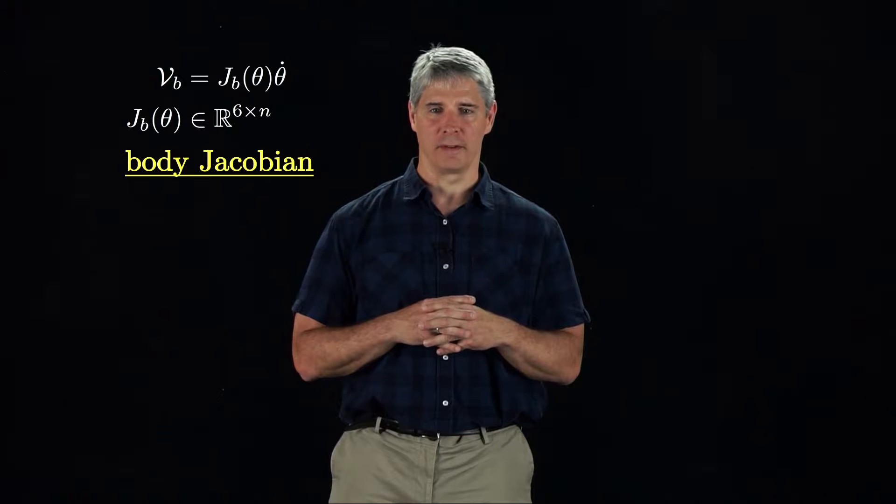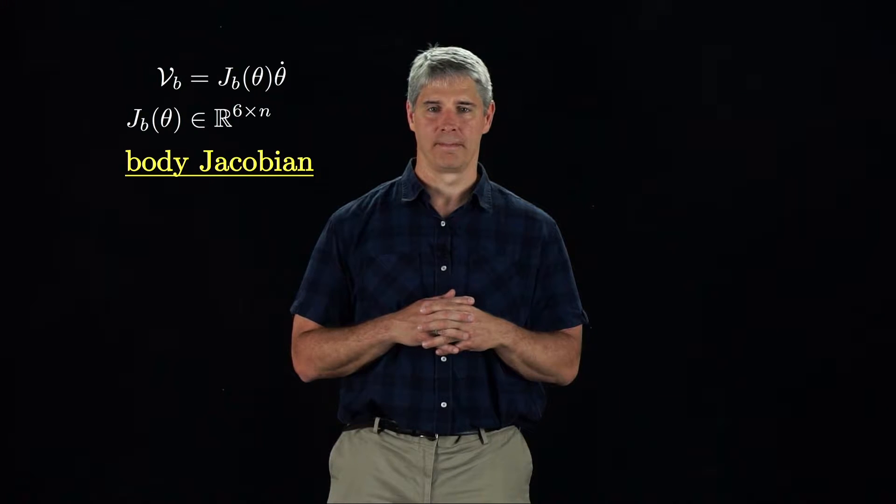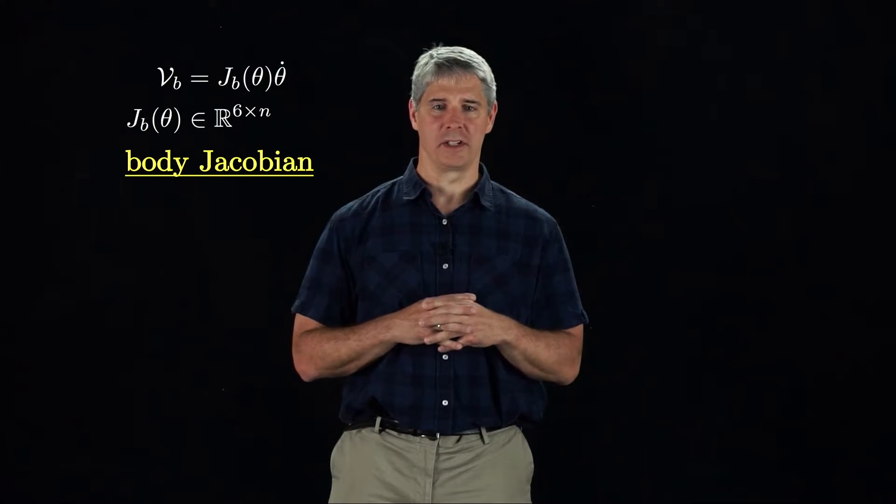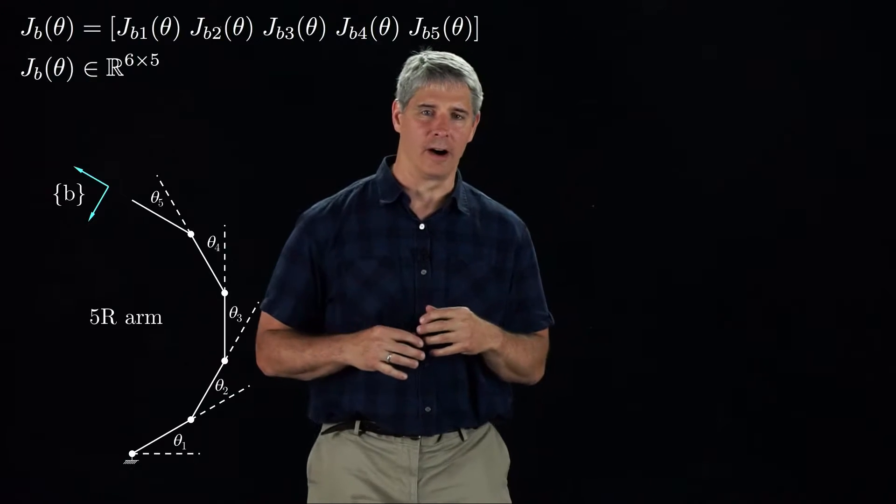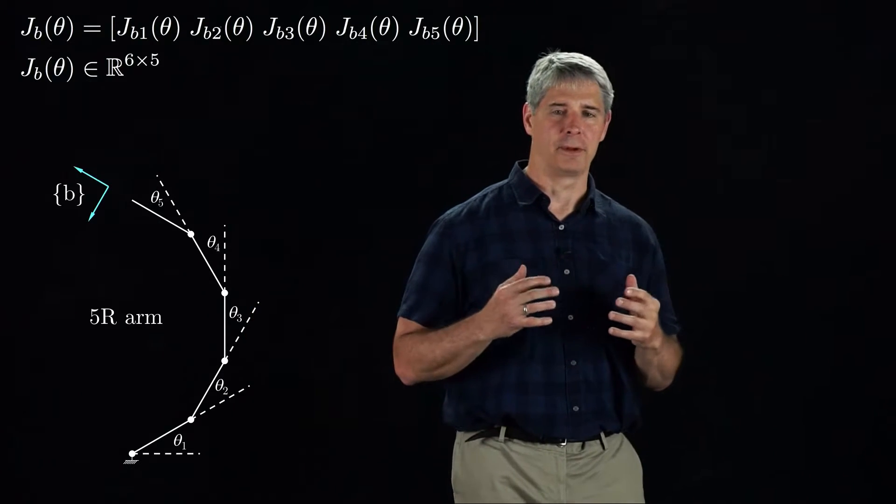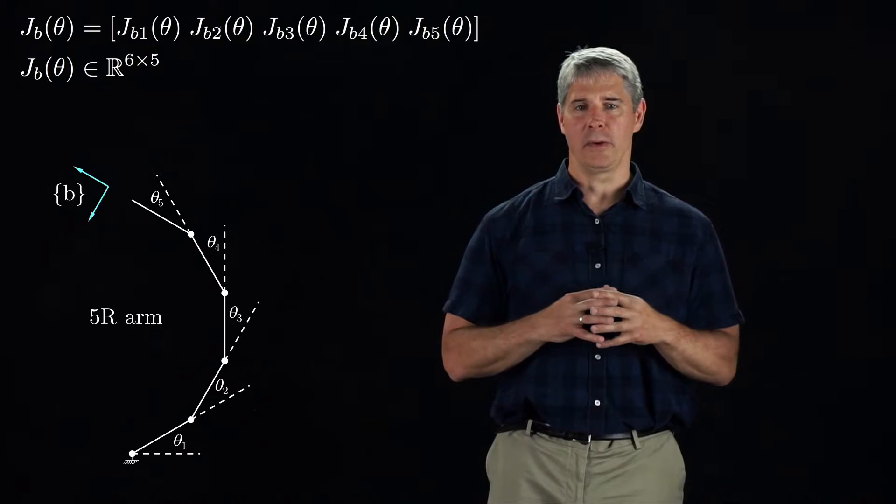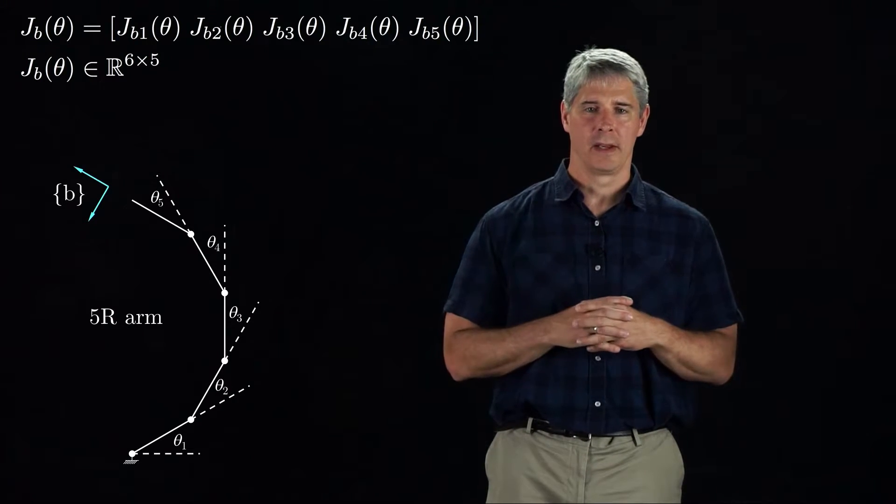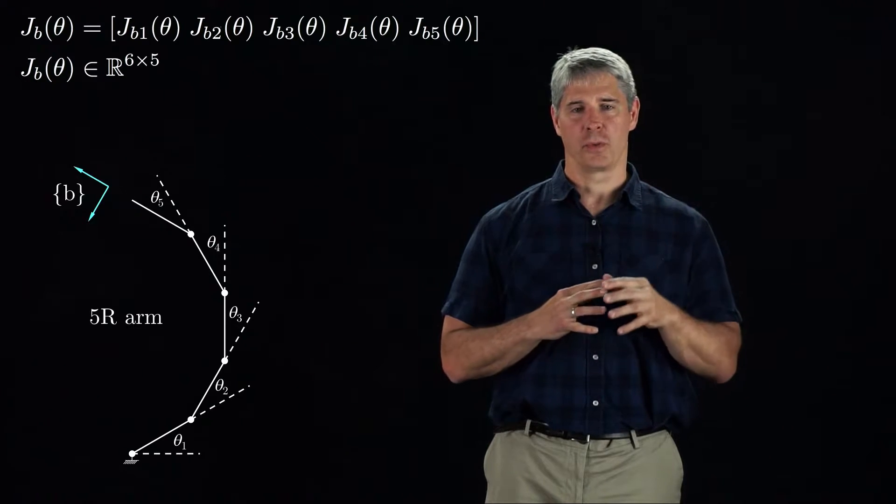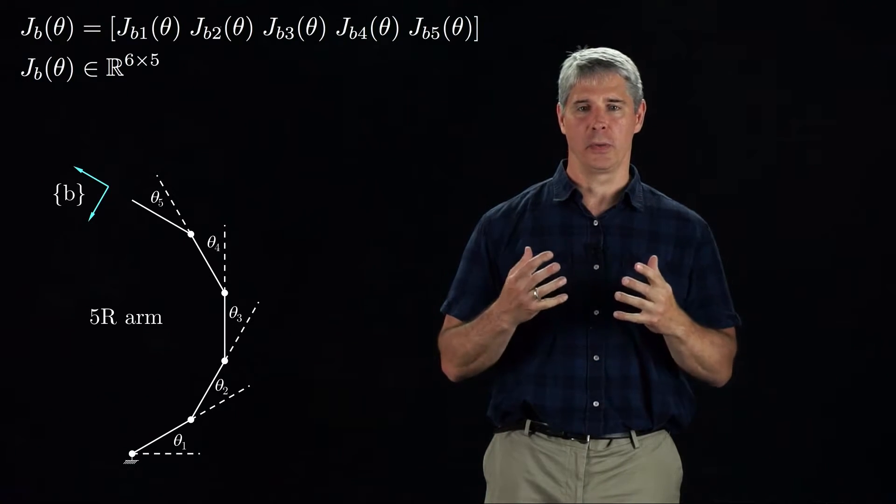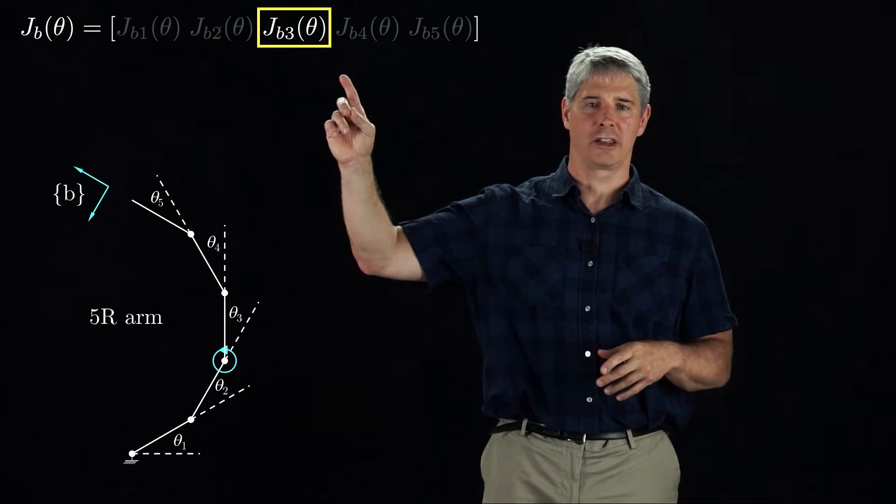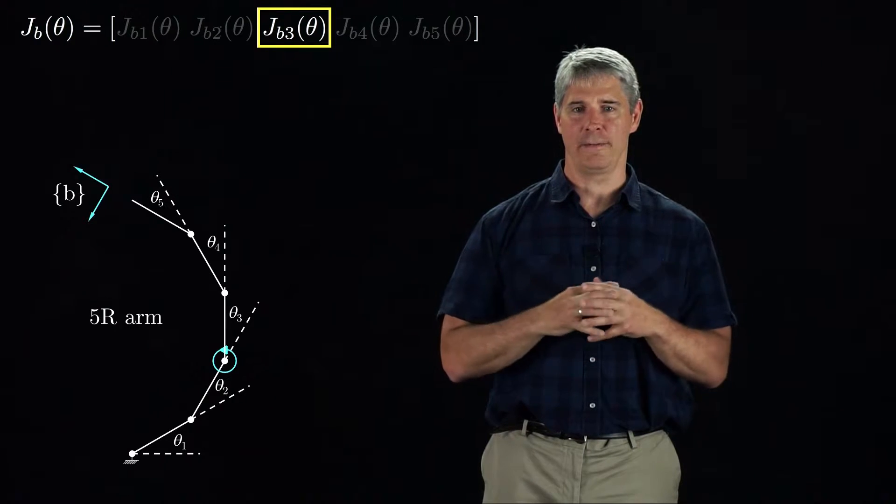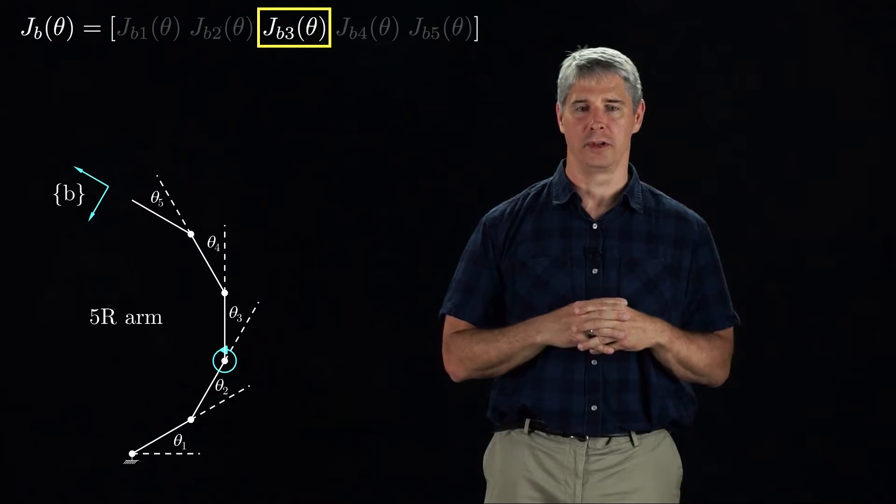The body Jacobian transforms joint velocities to the body twist. To derive the body Jacobian Jb, let's use the 5R arm from the previous video as an example. To derive Jb, we need to define the end effector frame B, but we don't need an S frame. Jb has five columns, one for each joint, and in this video we will focus on Jb3, the third column, corresponding to the end effector twist when joint 3 moves with unit velocity.